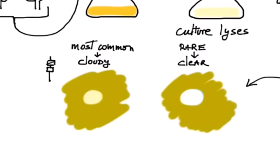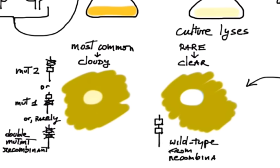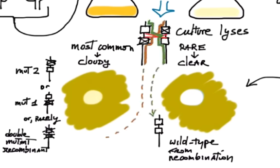Cloudy plaques will be the majority. They are caused by the parental phages or by the very rare double mutant recombinant. Clear plaques will be also very rare. They are caused by a wild type phage formed by a crossing over that joins the good A and the good B alleles.